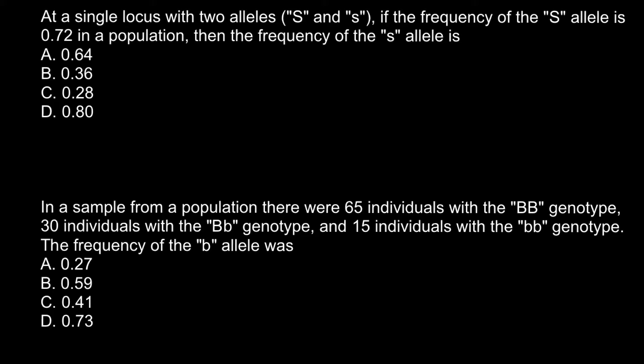How are we going to solve this problem? Imagine that we have a dominant allele and a recessive allele. These two types of alleles may produce three genotypes. One would be homozygous dominant, another one would be heterozygous, and the last one would be homozygous recessive.